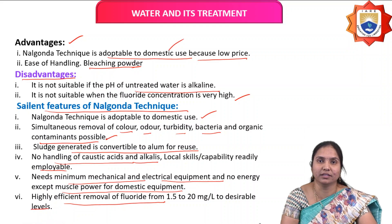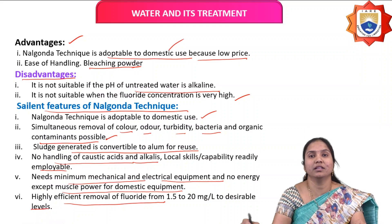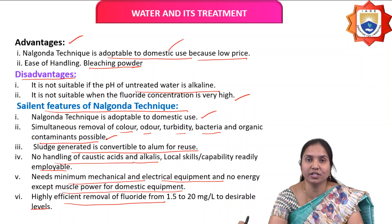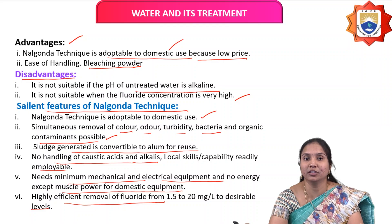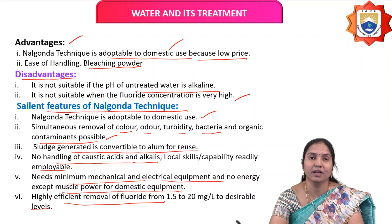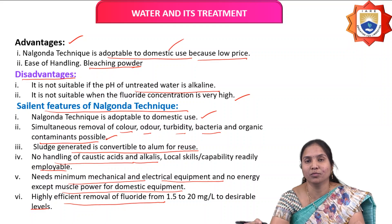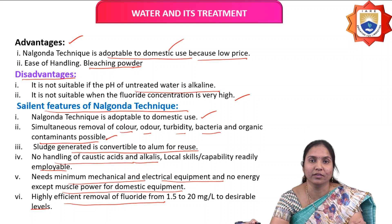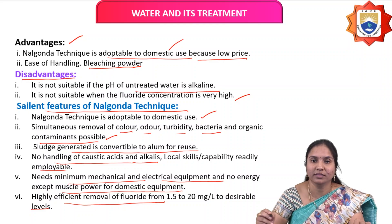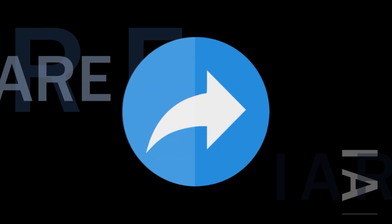In this class, we learned about desalination by the reverse osmosis method — also called hyperfiltration or electrodialysis — which converts hard water or sea water to drinking water. We also covered defluoridation using the Nalgonda technique for removing fluorine from water. I hope you understood. Thank you — please like, share, subscribe, and hit the bell icon for more updates.